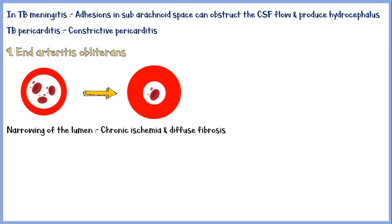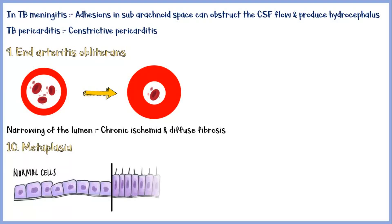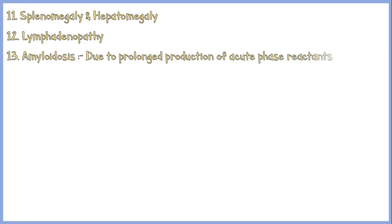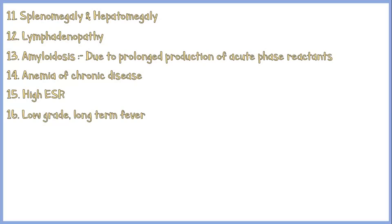Sometimes, epithelial surfaces involving chronic inflammation may undergo metaplasia. If persistent, metaplasia may lead to dysplasia and ultimately malignant proliferation of the epithelium. Some common systemic manifestations of chronic inflammation include splenomegaly and hepatomegaly due to hyperplasia of the mononuclear phagocytic system, lymphadenopathy, amyloidosis due to prolonged production of acute phase reactants, anemia of chronic disease, high ESR, low-grade long-term fever due to circulating cytokines, and loss of appetite and weight loss due to the inhibitory effect of tumor necrosis factor.